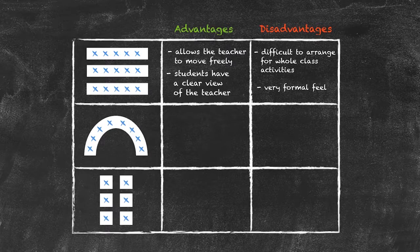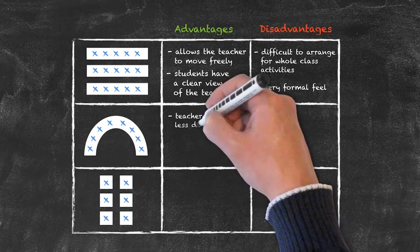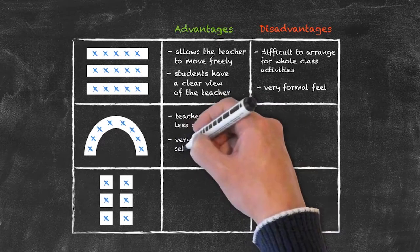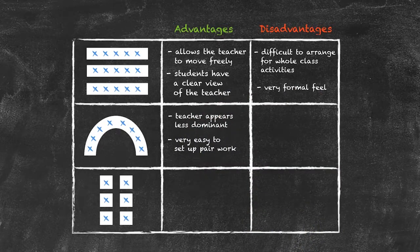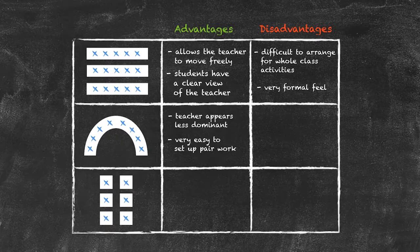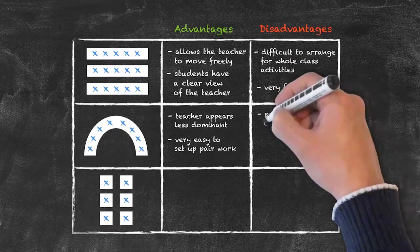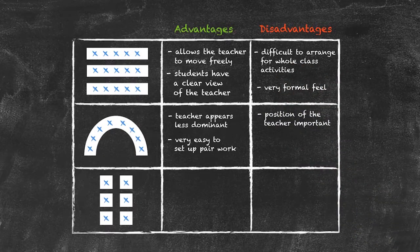One potential way of getting around this is to use the horseshoe arrangement. Some advantages: the teacher appears less dominant within the horseshoe, and it's very easy to arrange pair work. A potential disadvantage is the actual position of the teacher. If the teacher moves inside the horseshoe, some students will actually be behind the teacher and therefore will not be able to see the teacher's mouth when speaking, losing a lot of information. So a major disadvantage is that the teacher's position becomes very important.